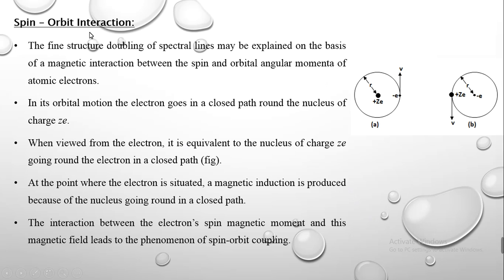Next, I will discuss the spin-orbit interaction. The spin-orbit interaction leads to an explanation of the fine structure — the doubling of spectral lines. It is based on the interaction between the magnetic moment due to spin motion and the orbital motion of the electron. In its orbital motion, the electron goes in a closed path around the nucleus of charge ZE. Viewed from the point of view of the electron, it appears as if the nucleus of charge ZE is going around the electron in a closed path, producing a magnetic induction. The interaction between the electron spin and this magnetic field leads to the phenomenon of spin-orbit coupling.